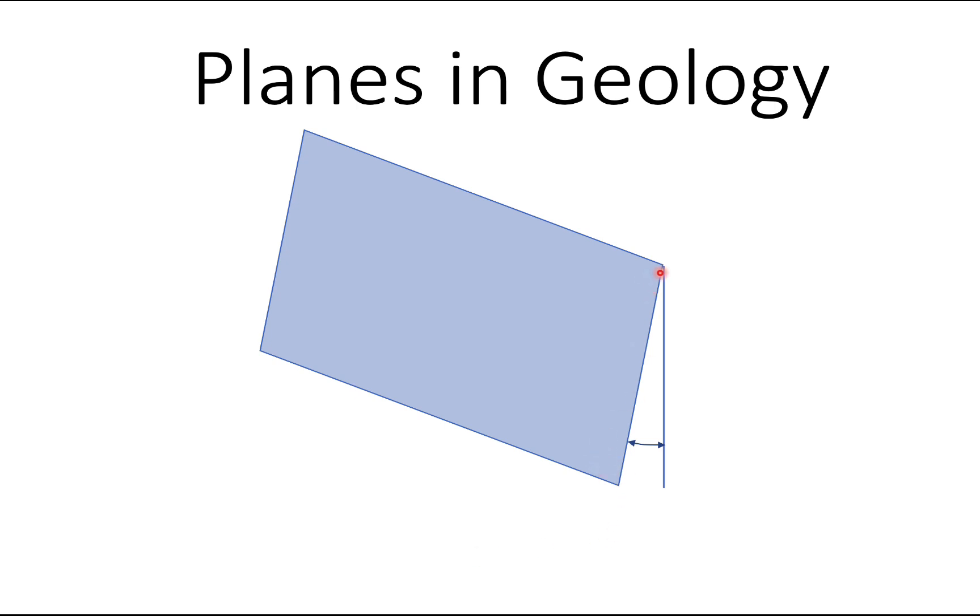So here's a plane, it's got a horizontal direction. This is called the strike. So this is a plane which is at an angle, it's not vertical, it's at an angle from the vertical.